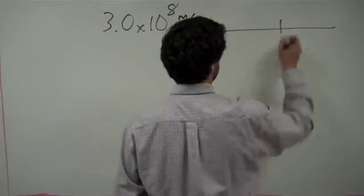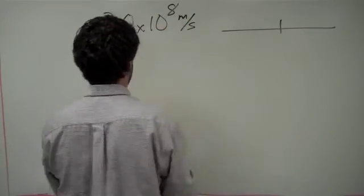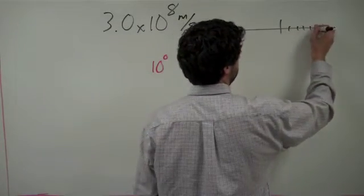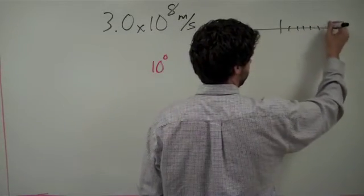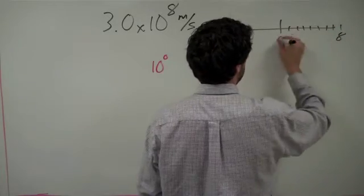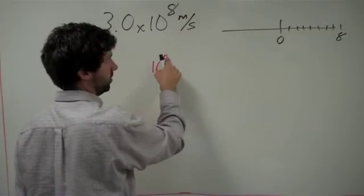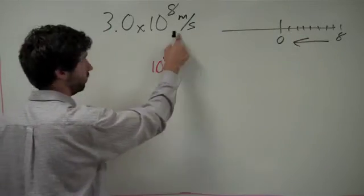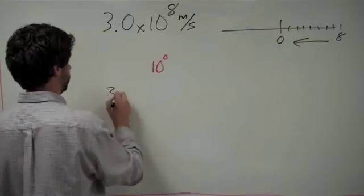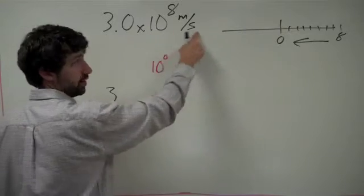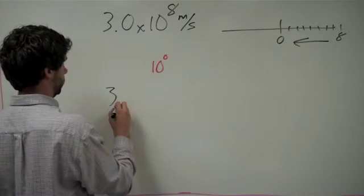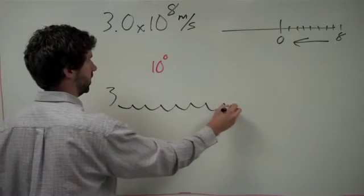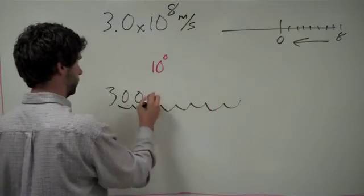So once again let's take a look at our number line. We want to end up at 10 to the 0. We're starting at 8 on the number line and we want to end up at 0. So that means we're moving left on the number line, which means our decimal place should move right. So we move the decimal right 1, 2, 3, 4, 5, 6, 7, 8 places and add our zeros.